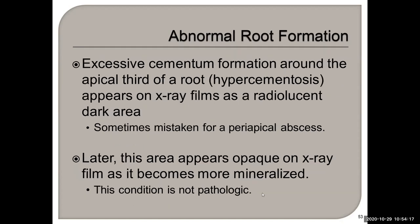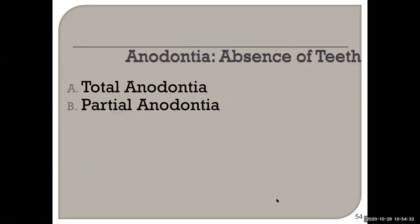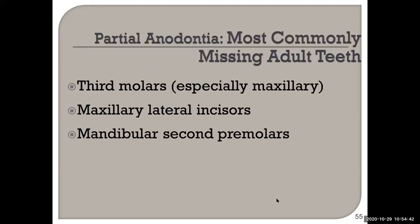You can have excessive cementum formation — remember hypercementosis — which appears on a radiograph. This is different from an odontoma, which destroys roots. Remember the difference between total anodontia and partial anodontia: maxillary third molars are commonly missing first, then the maxillary laterals, then the mandibular second premolars.